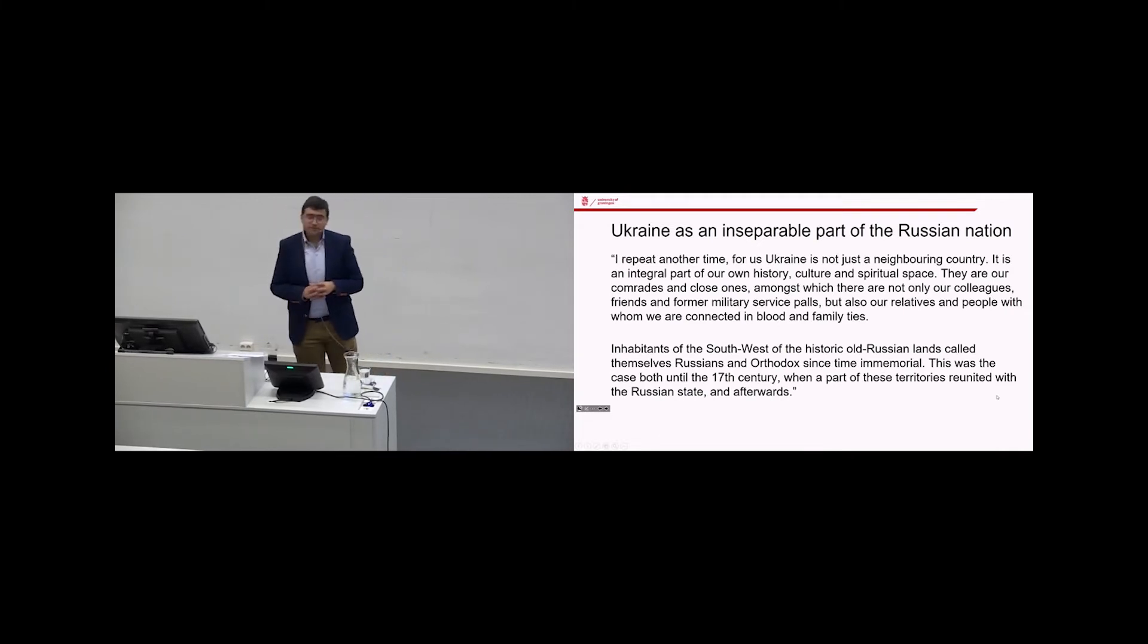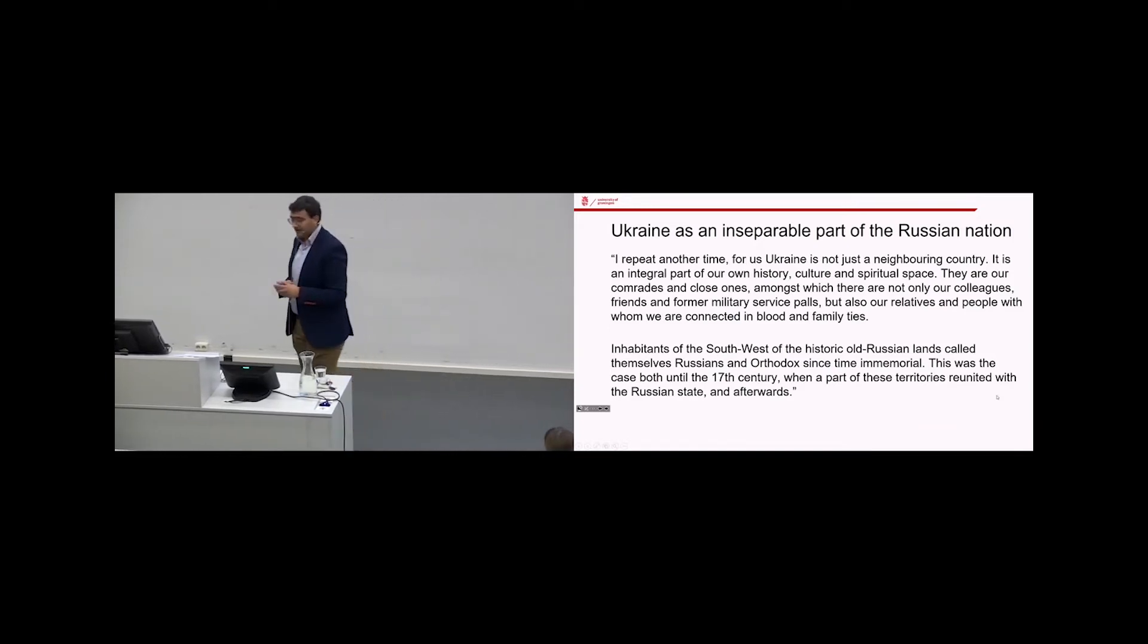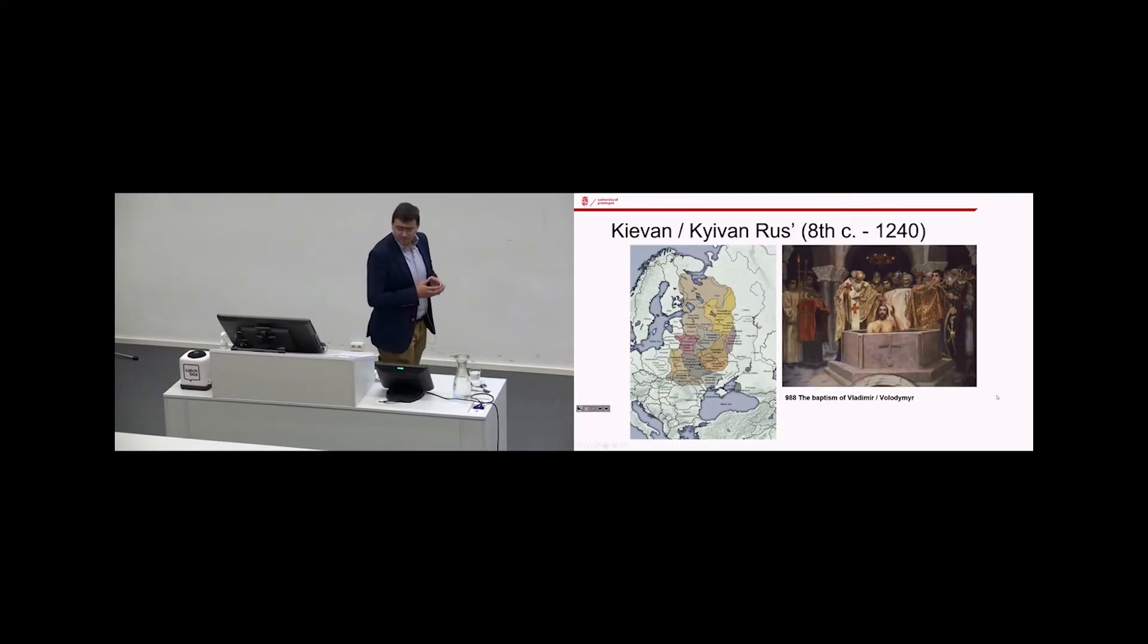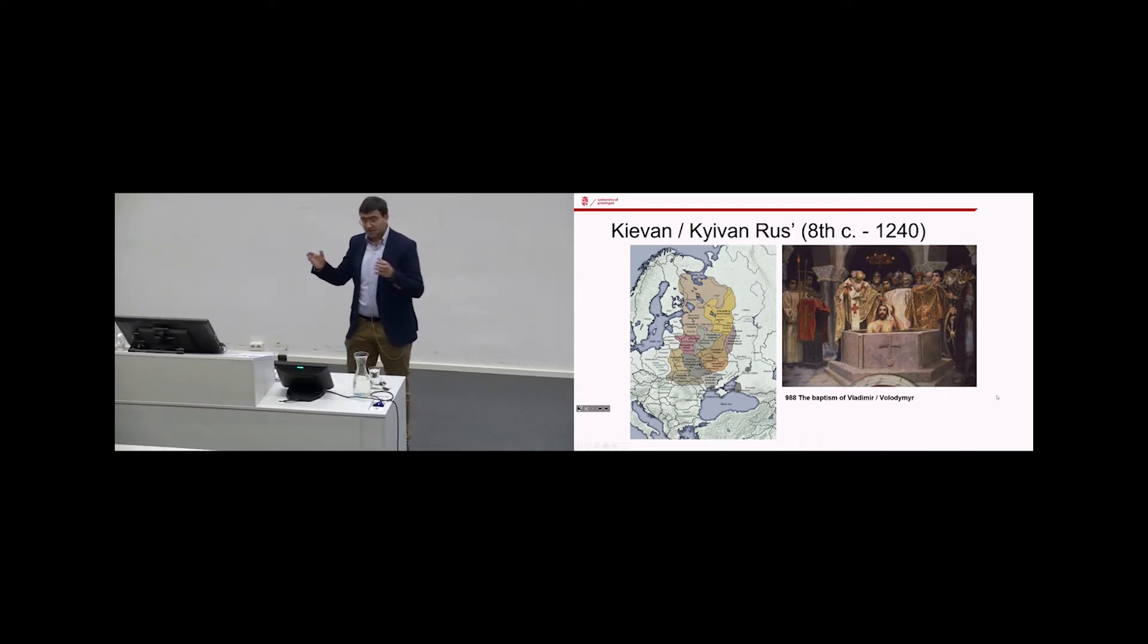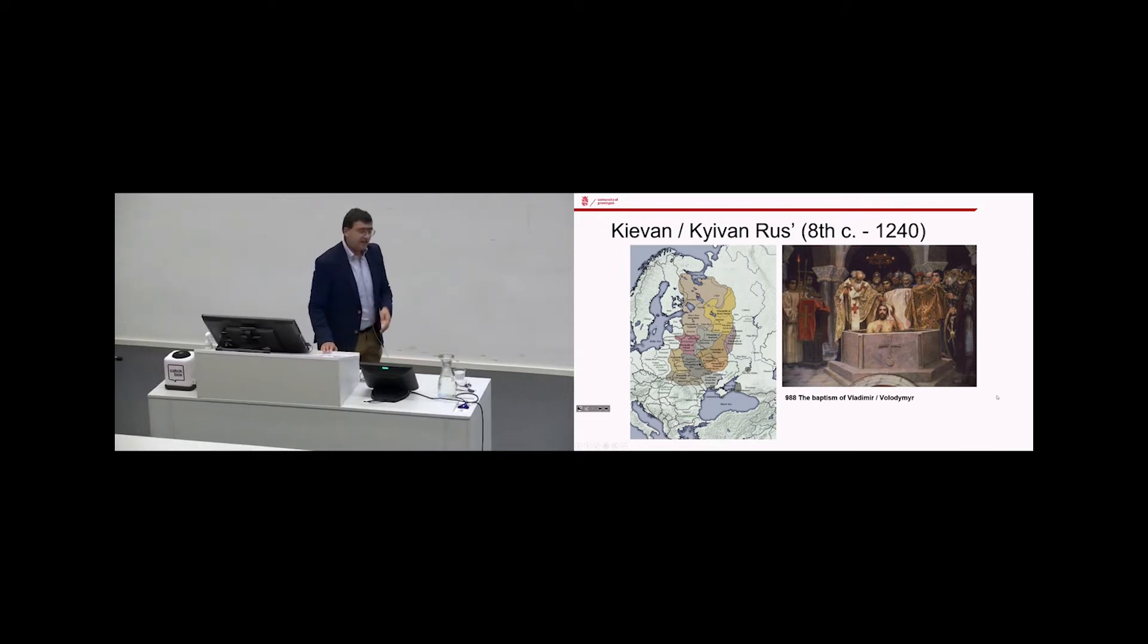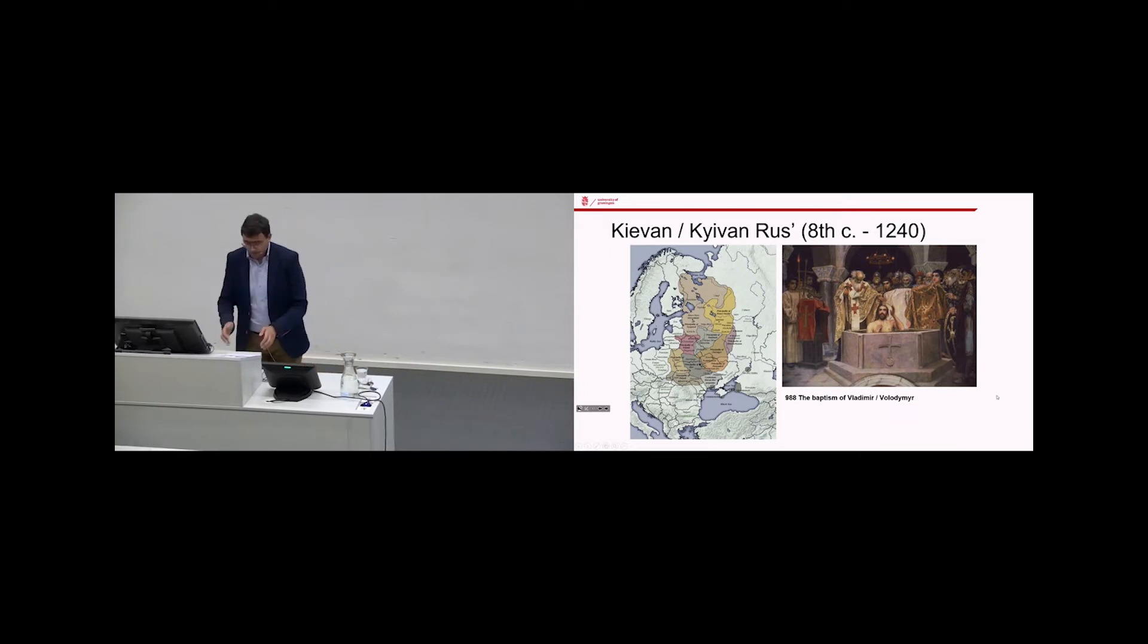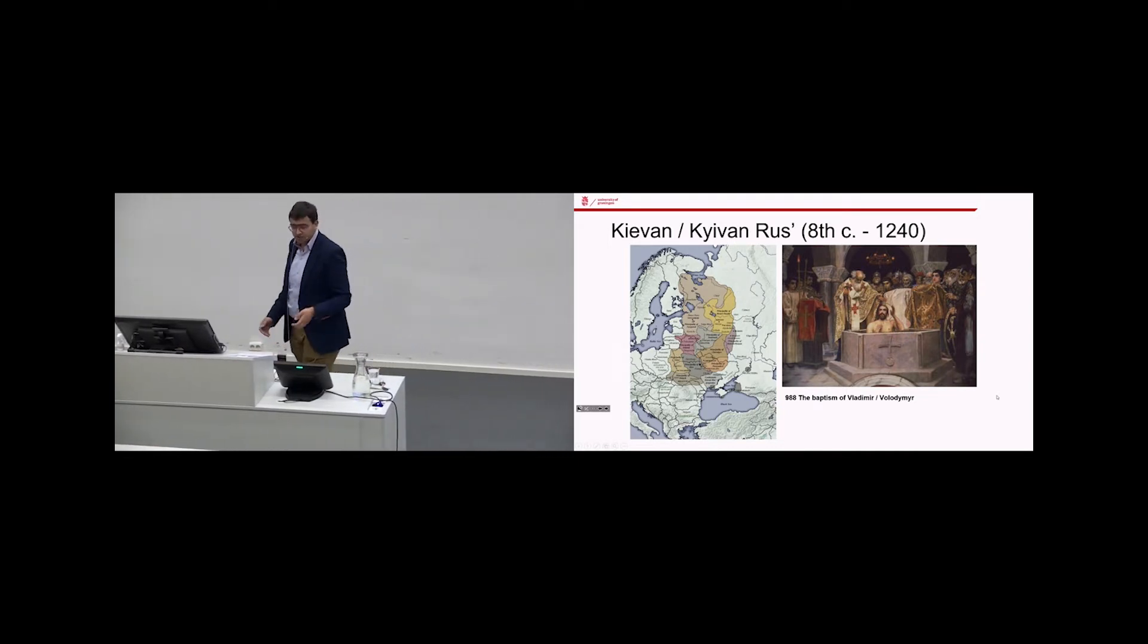Inhabitants of the southwest of the historic old Russian lands, this is Putin's word for saying Ukraine, called themselves Russians and Orthodox since time immemorial. This was the case until the 17th century when a part of these territories reunited with the Russian state. Putin basically says Ukraine is not an independent nation and these people who live there are simply Russians. To explain this we have to go back to the Middle Ages unfortunately.